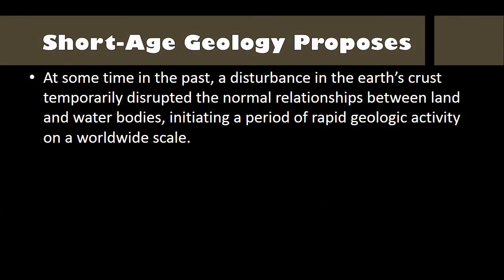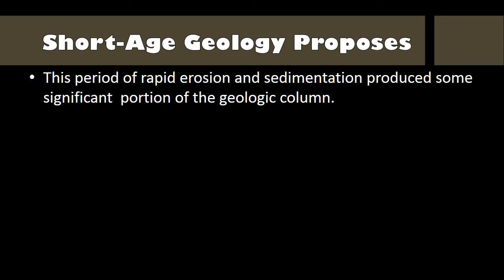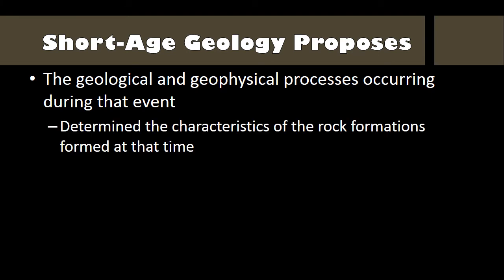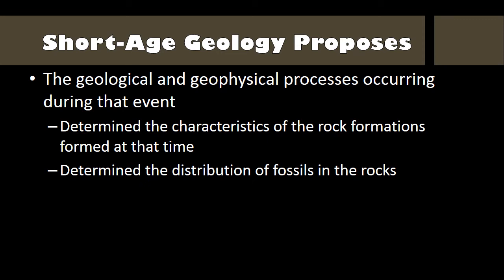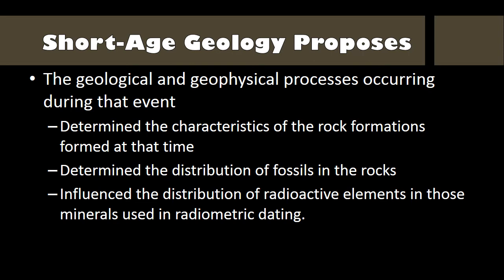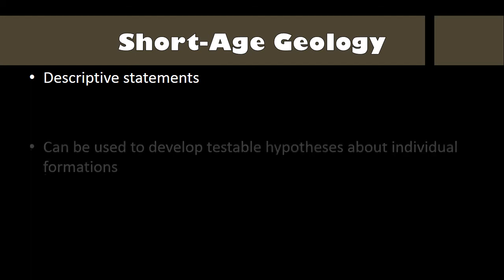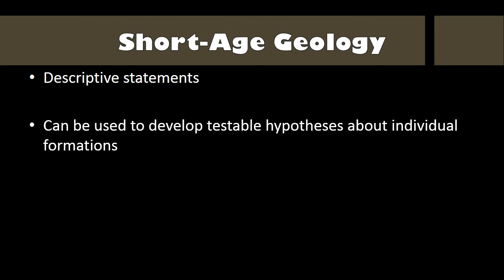Short-age geology proposes that at some time in the past, a disturbance in the Earth's crust temporarily disrupted the normal relationships between land and water bodies, initiating a period of rapid geologic activity on a worldwide scale. This period of rapid erosion and sedimentation produced some significant portion of the geologic column. The geological and geophysical processes occurring during that event determined the characteristics of the rock formations formed at that time, the distribution of fossils in the rocks, and influenced the distribution of radioactive elements in those minerals used in radiometric dating. The propositions of short-age geology can be stated as descriptive statements and used to develop testable hypotheses about individual formations.